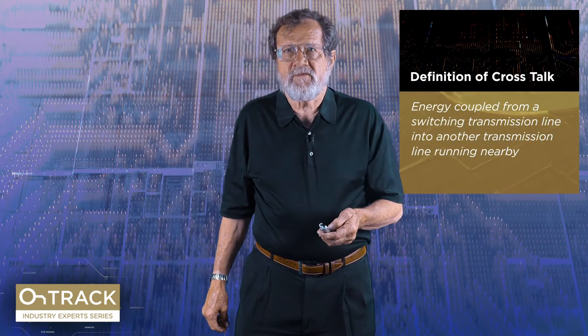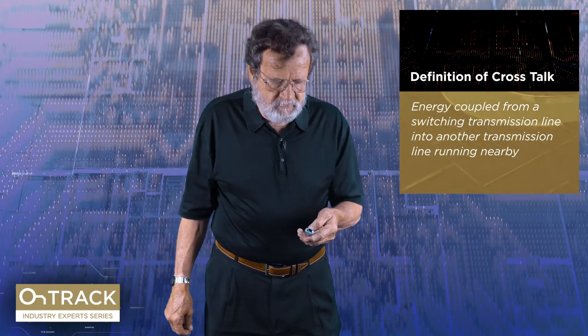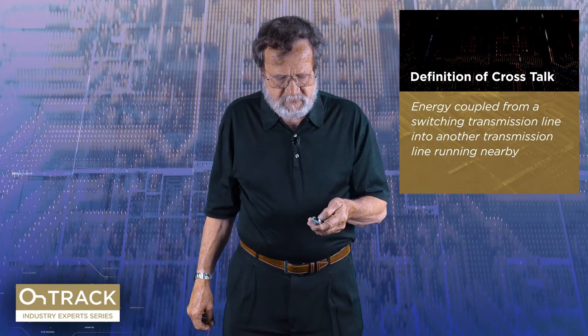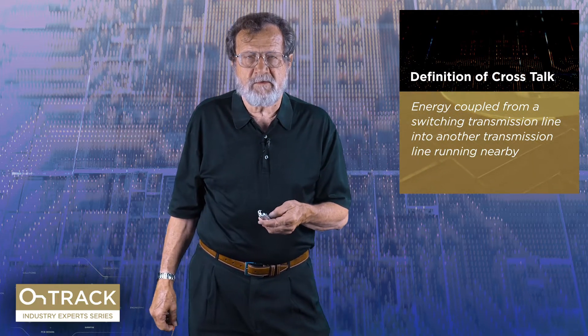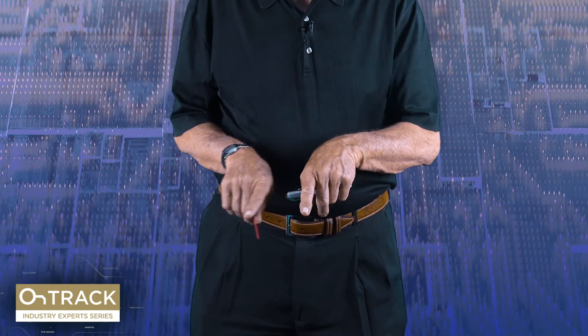Crosstalk is when one line switches next to another that's running parallel — energy will be induced in what we call the victim line. We want to make sure that whatever is coupled into the victim is within the limits of that logic family to live with. There are two ways on a printed circuit board we can have this problem. If we route traces side by side in the same layer, that is often called inductive crosstalk. If we route by mistake one over the top of the other in adjacent layers, that is usually called capacitive crosstalk. In the case of adjacent layers, we'll make one axis X and the other Y so that problem does not happen.